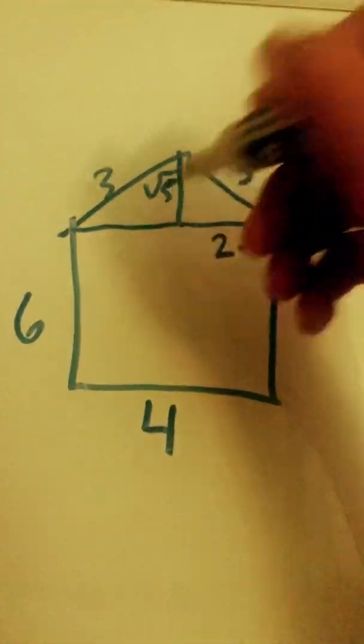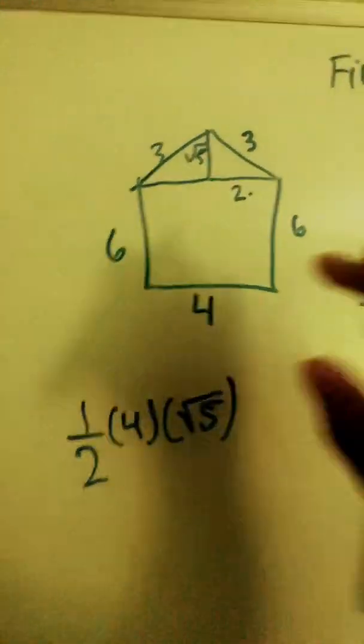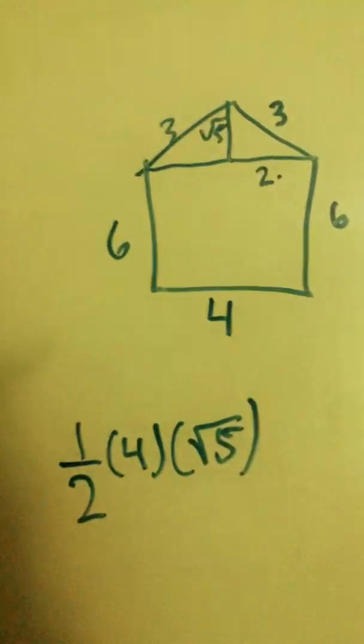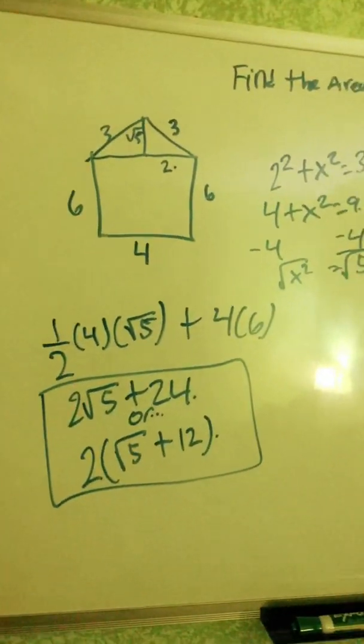Find the area of this triangle and then add it to the area of the square. These are two possible answers to this question. Let me know if you have any questions.